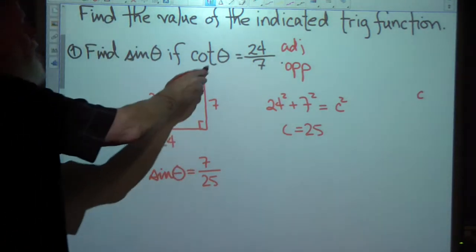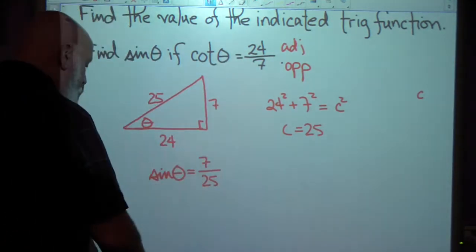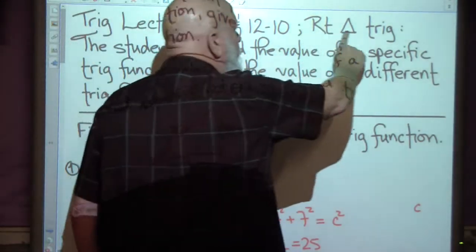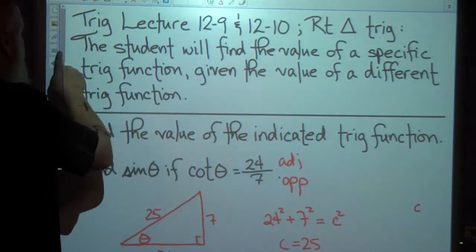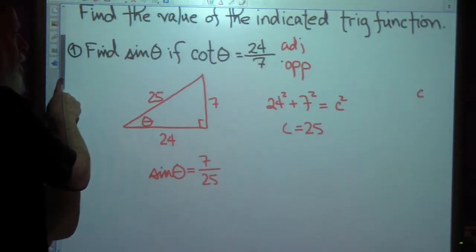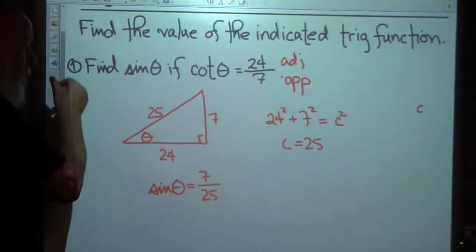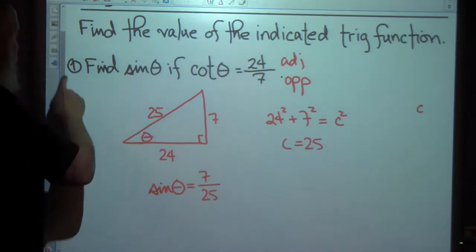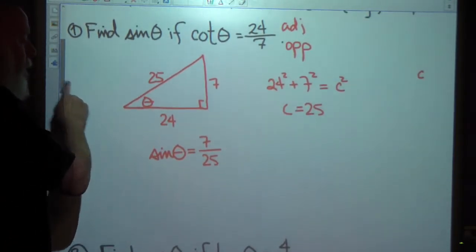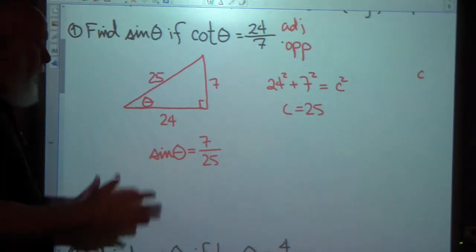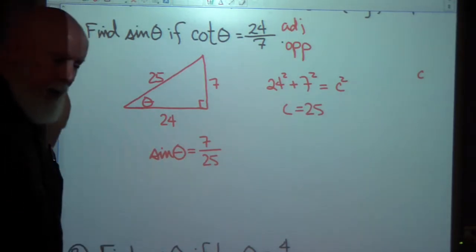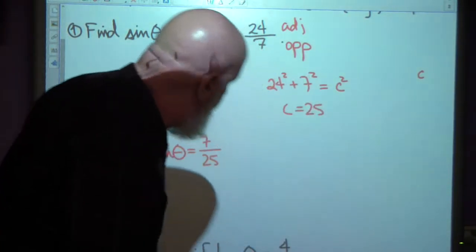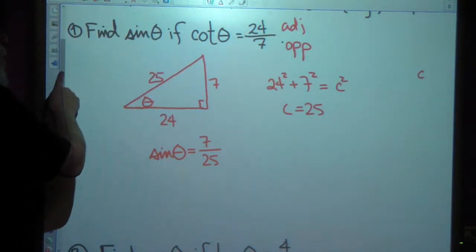So sine theta is 7/25, given that cotangent theta is 24/7, and we're talking about right triangle trig. If we were talking about angles of rotation there could be other angles involved, but here we're talking about right triangles. Let's take a look at another one.